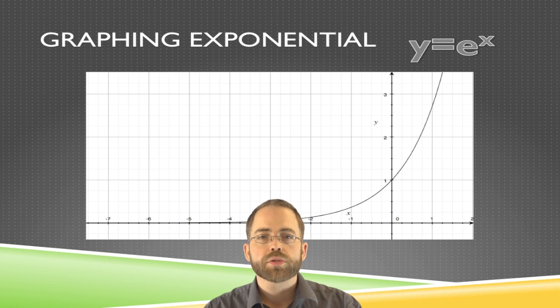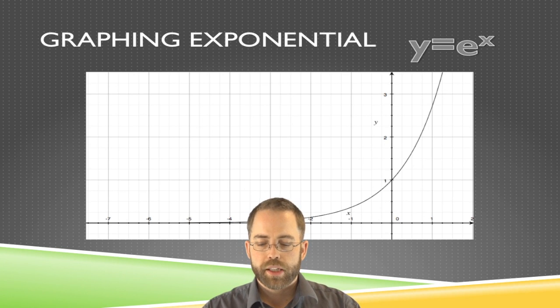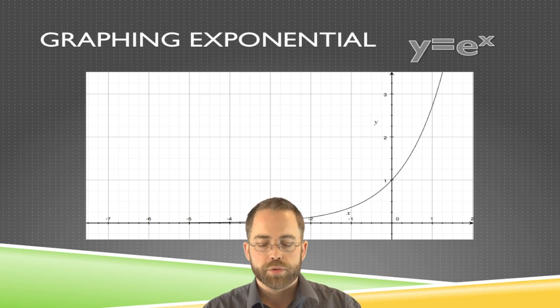Graphing exponential functions is pretty straightforward. The only really easy points to find with something like e, assuming you know it's about 2.7, is to the 1, to the 0, to the negative 1.